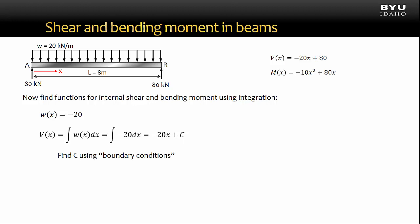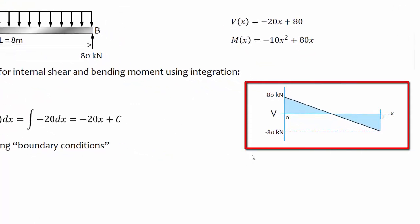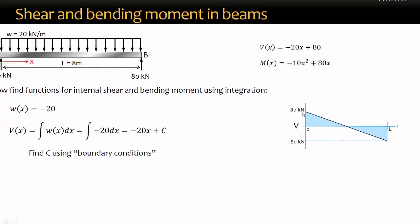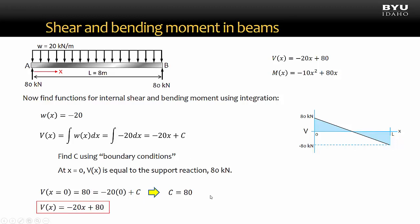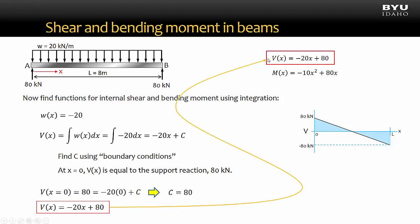We will find the integration constant by using the boundary conditions of our shear function. The boundary conditions are points where we know the value of the shear function. For this problem, we know the values for the shear at the supports — at the supports, the shear is equal to the support reactions. We see that at point A, where x is equal to 0, the shear is equal to positive 80 kilonewtons. So I can say that at x equals 0, the function for shear in terms of x is equal to the support reaction, which is 80 kilonewtons. I apply this information by setting my shear function equal to 80 when evaluated at x equals 0. My only unknown is the integration constant, and when I solve for it, it's equal to 80. I replace the constant C in my shear equation with 80, and now I have my shear function. Note that we got the same result as the direct equation method.